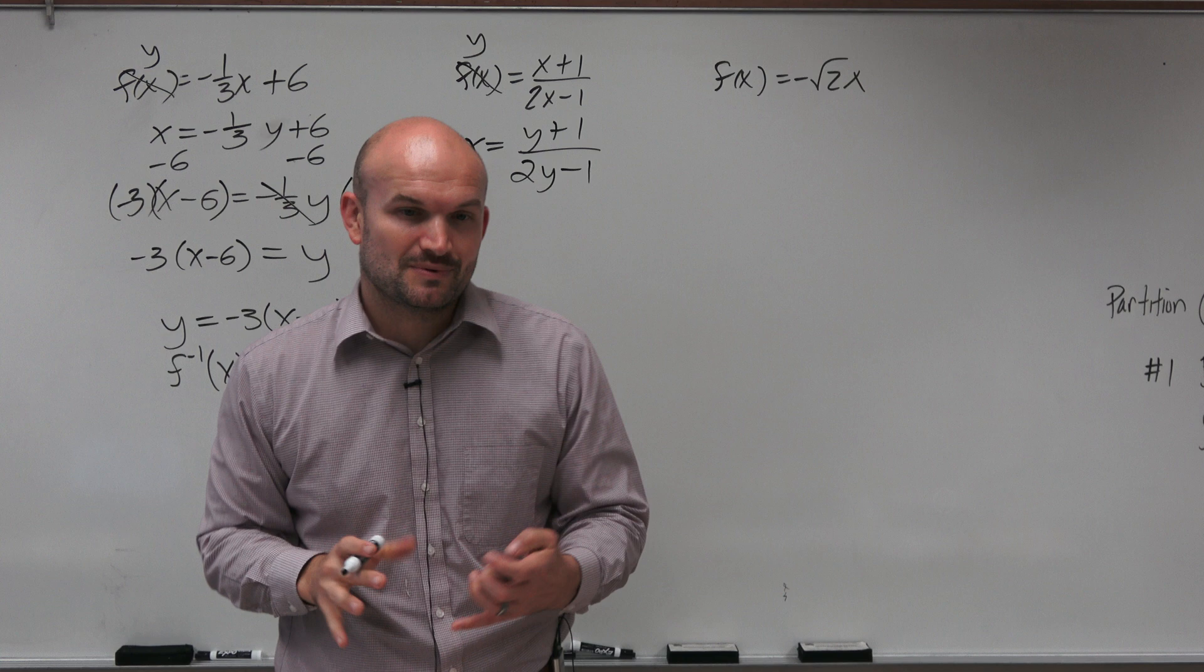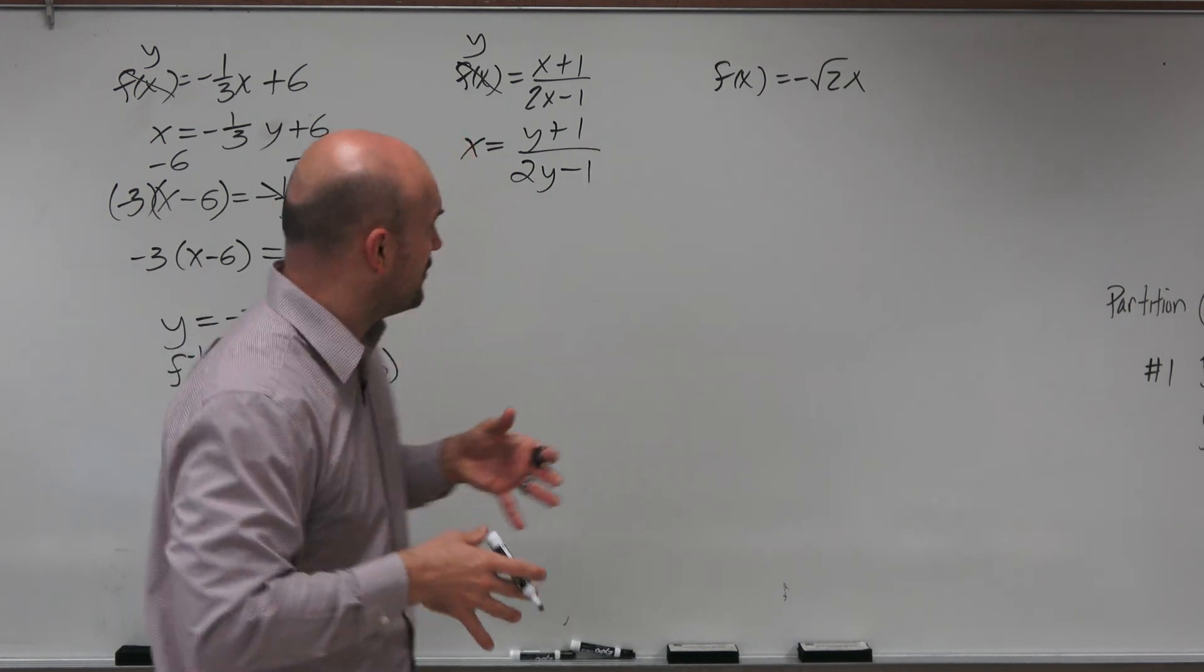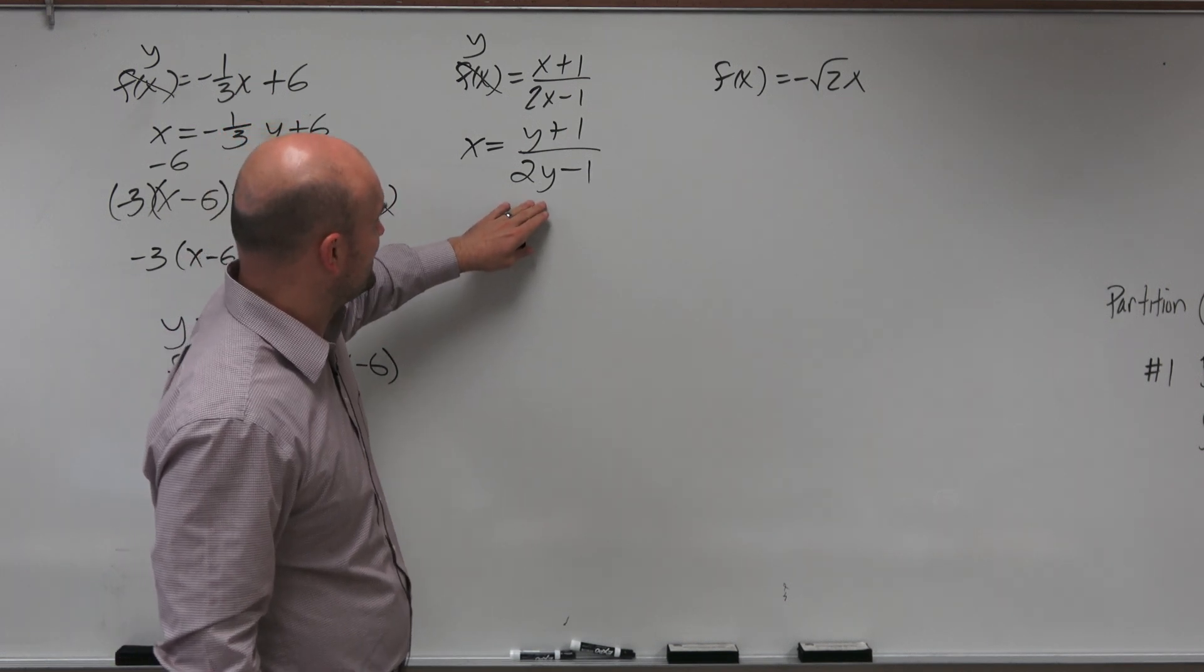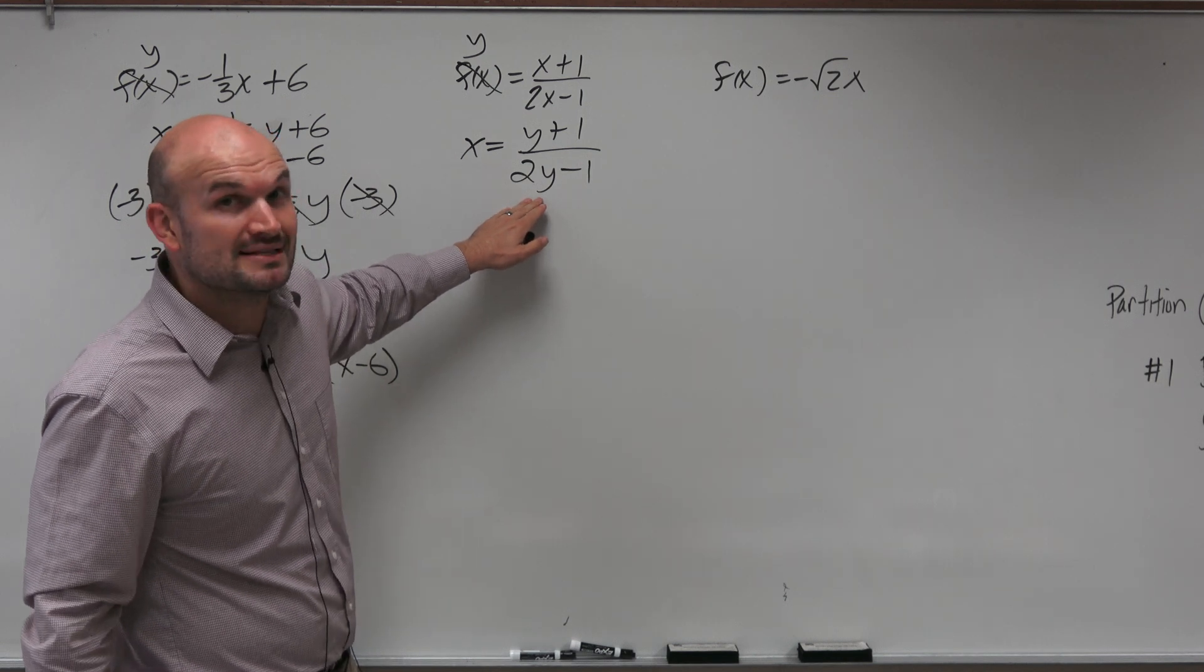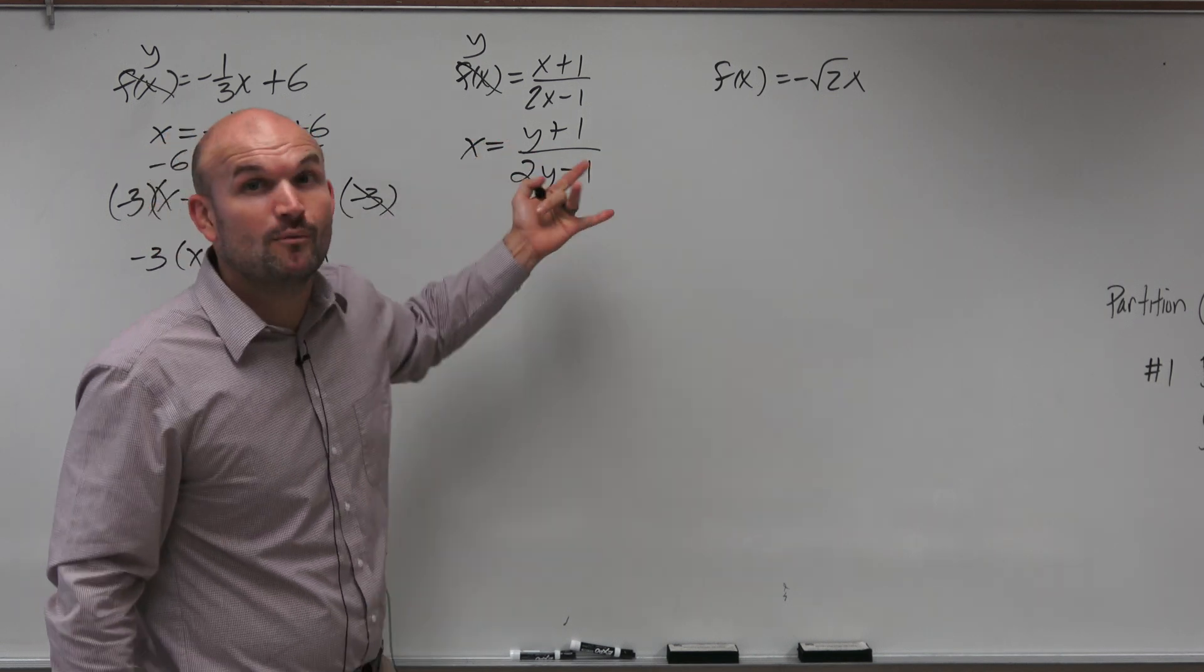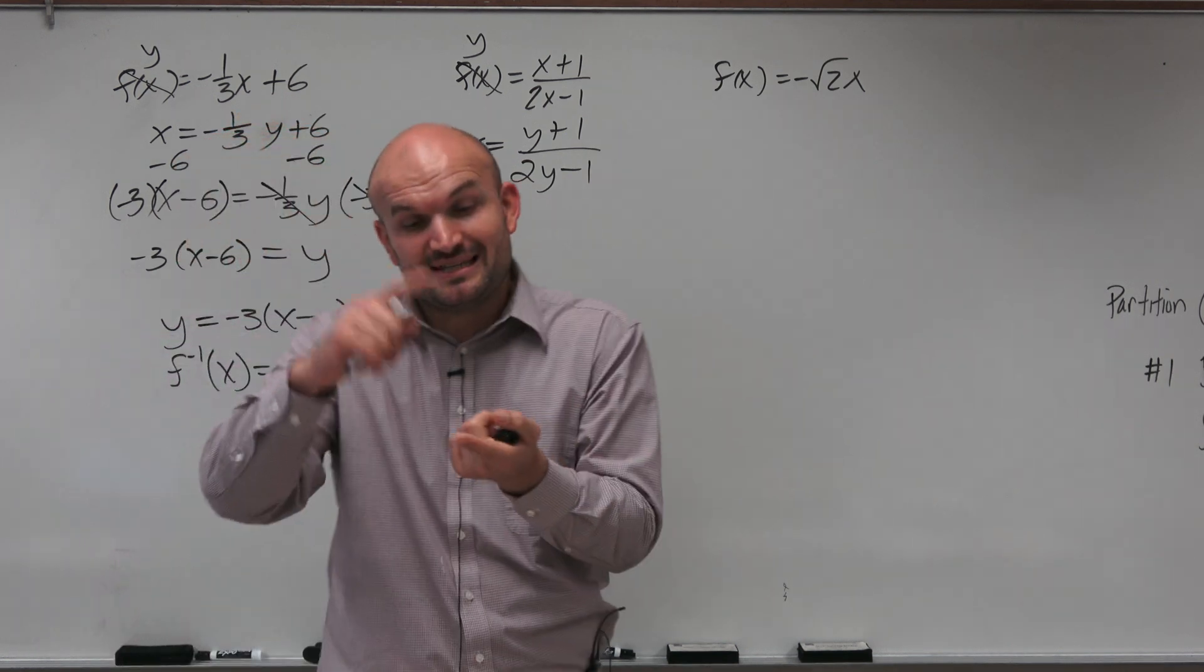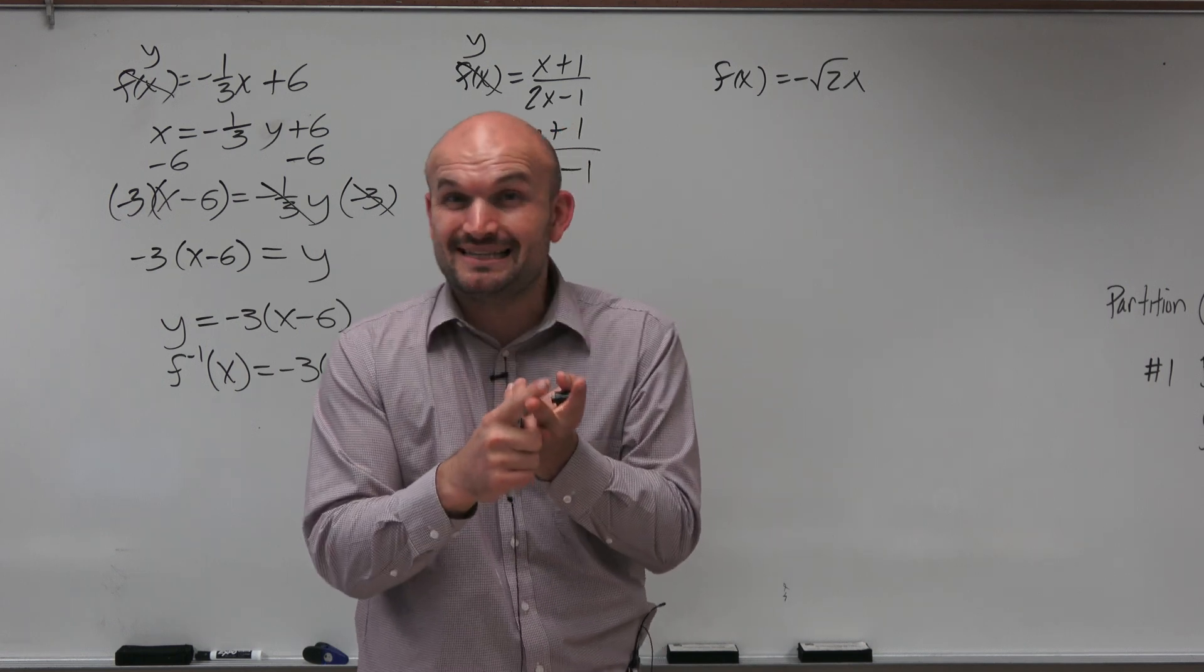So the mistake that students make in this one is, there's actually kind of two of them. I'm just going to embed them in kind of one. But they try to solve for y in the denominator. You can't solve for y in the denominator. Nor can you solve for two different y's in the same equation, right? So a couple of things we have to do. We have to get rid of the variable in the denominator. And we have to combine these variables.